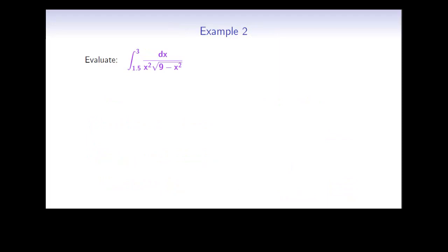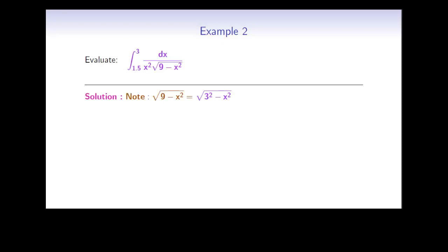Here's our next example: a definite integral from 1.5 to 3 of dx over x² times the square root of 9 minus x². This integrand involves the square root of 9 minus x², which is 3² minus x², so a equals 3. Because we have a number minus x², we use sine theta: let x equal 3 sine theta. Differentiating, dx equals 3 cosine theta dθ, and the interval is negative π/2 to π/2.